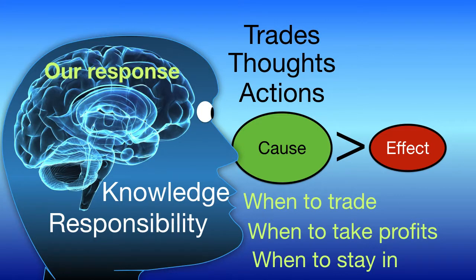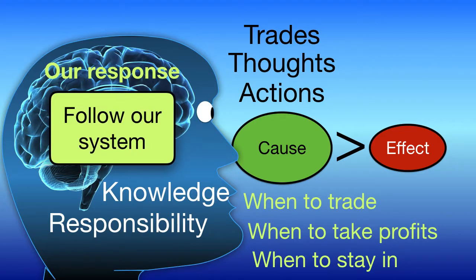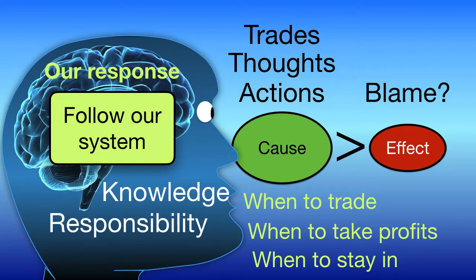If we're losing money and taking trades without a good trader's equation, if we're not following our system to the letter and we're taking impulse trades, then we're at effect. We must take responsibility for following our system or for finding a system that works. We can't blame our results on anybody else or any other thing, because as long as we blame outside influences, we won't change — we'll not make the changes needed to become consistently profitable.